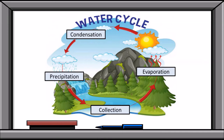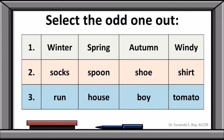We now move on to the next type: Select the Odd One Out. You can use this for different subjects and levels — I've taken an English language example from a lower class, but it works for higher classes too. In Odd One Out, you have four to five words and students identify which doesn't belong. For example: winter, spring, autumn, windy — 'windy' is the odd one out because the others are names of seasons.